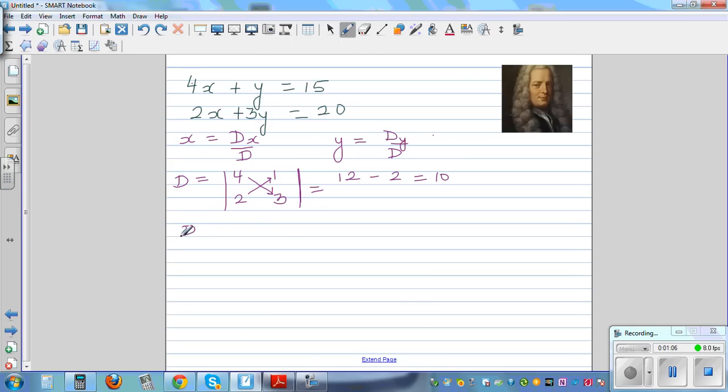Okay, dx is, you don't write the coefficient of x. You write the coefficient of y in the place of y. So you write 1, 3 like this. And in place of the coefficient of x, you write the constant which is 15, 20. And do the same process. So 15 times 3 is 45 minus 20, which is 25.